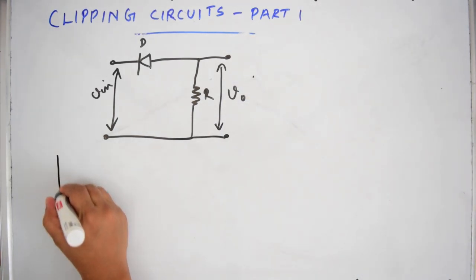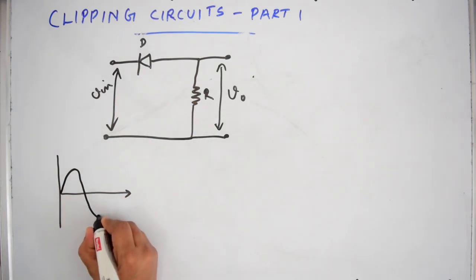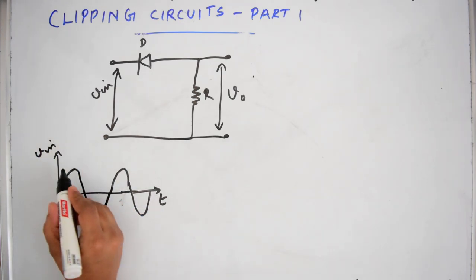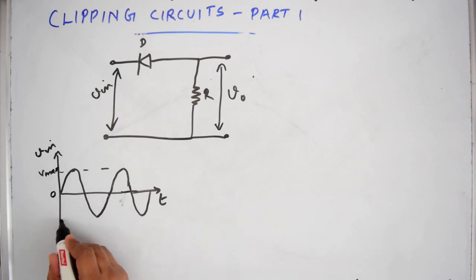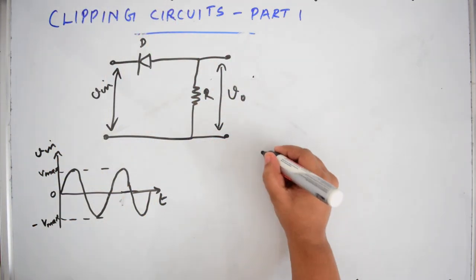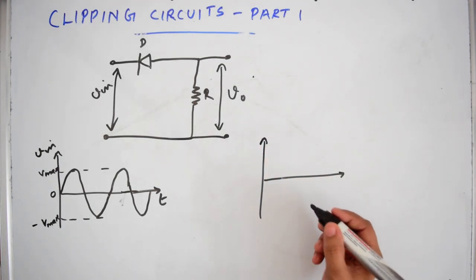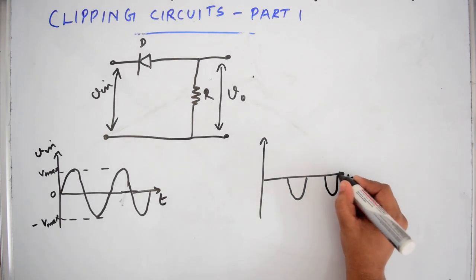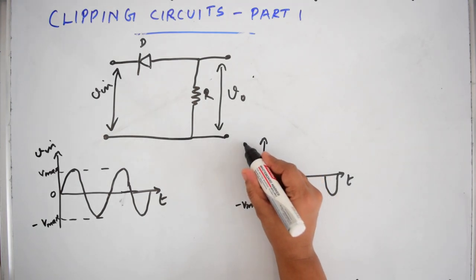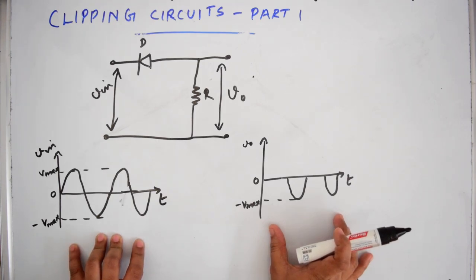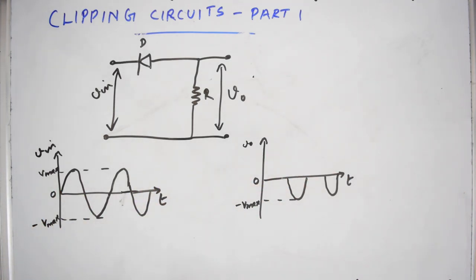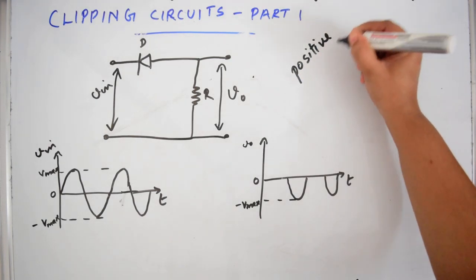Let's consider an input wave coming to this circuit. This is the input wave V-in, with V-max and minus V-max. After coming through this circuit, the output voltage V0 will look like this — it will be minus V-max. The positive half cycles will be clipped off from this input wave, and hence it is called a positive series clipper.